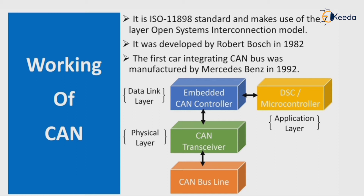The data link layer is used to link between the physical layer and the application layer. The application layer includes a DSC — digital signal controller — or microcontroller, which comprises the application layer of the ISO model.